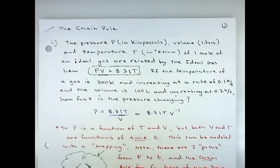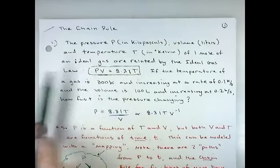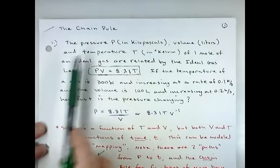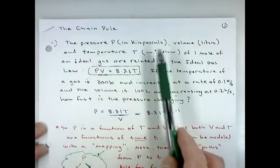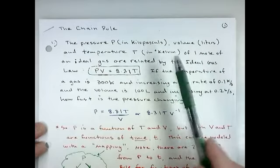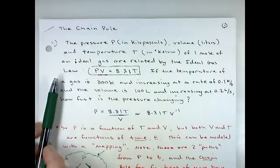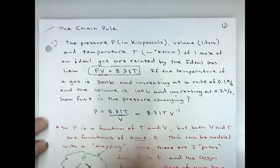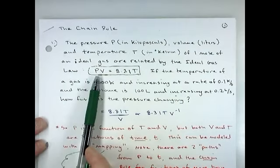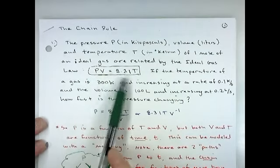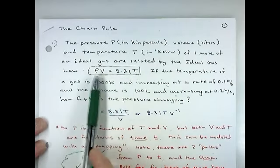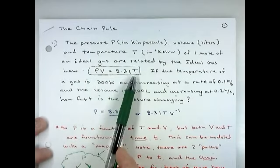We'll start with an actual application problem so we can see how this will be applied. It's a chemistry problem. We have a pressure in kilopascals, volume in liters, and temperature of one mole of an ideal gas. Many of you know the equation — they're related by the ideal gas law: PV = nRT, but if you have one mole it's just PV = 8.31T.